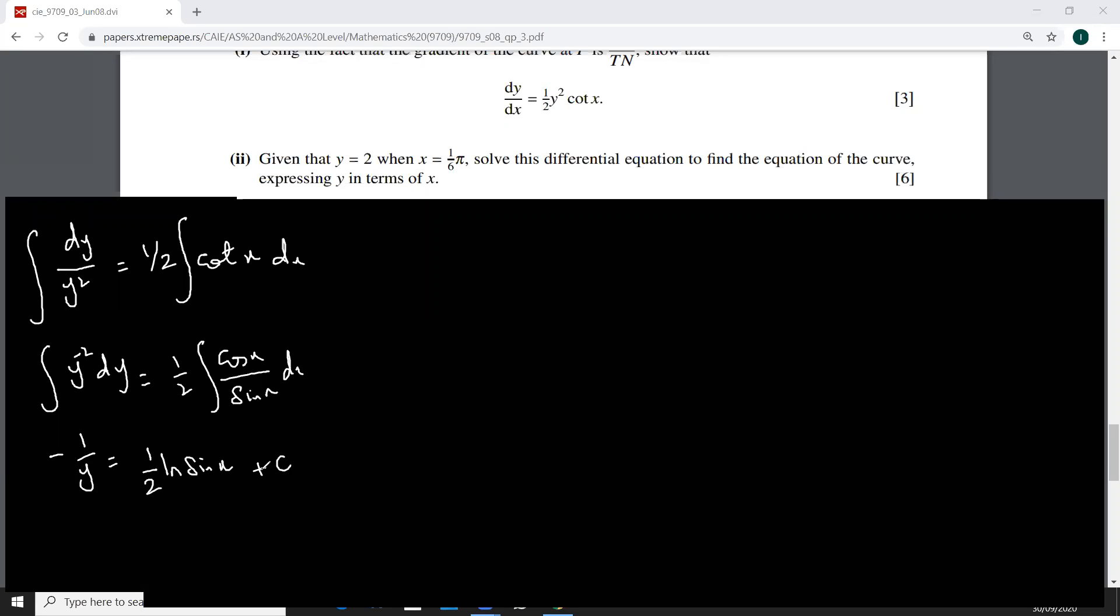Let's use this given values here. Y is two and x is five pi over six, so this is minus one by two, that is half ln one half plus c. Can I say this is minus half equal to minus half ln two plus c.